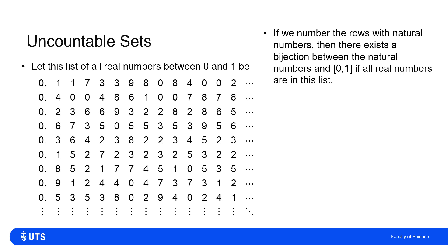So let's number the rows: the number on the first row maps to one, the number on the second row maps to two, the number on the third row maps to three. Even though the list of these real numbers has an infinite number of rows, there is an infinite number of natural numbers, so I can map each row uniquely one-to-one and onto the set of natural numbers. I'll put the index one, two, three, four down the rows.